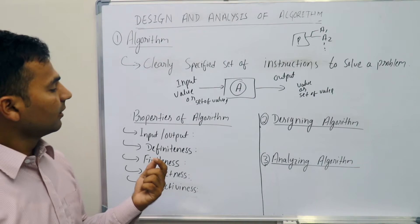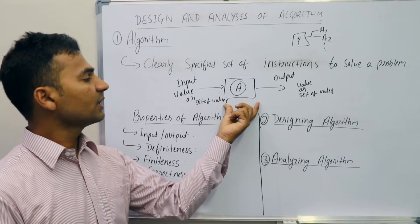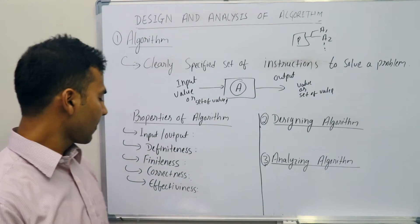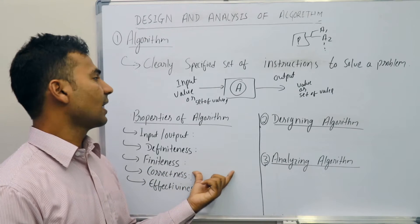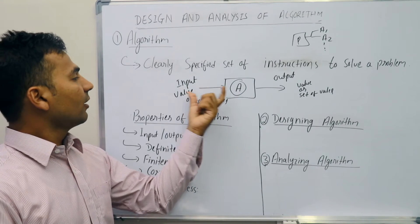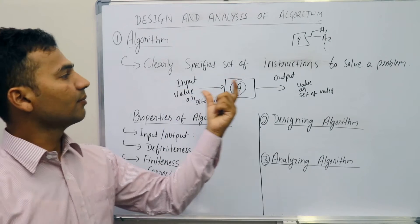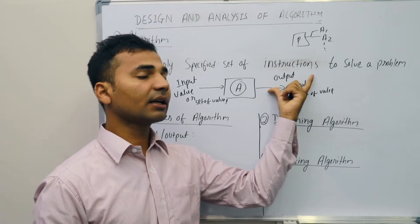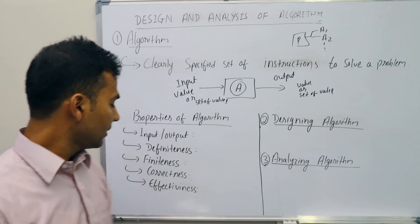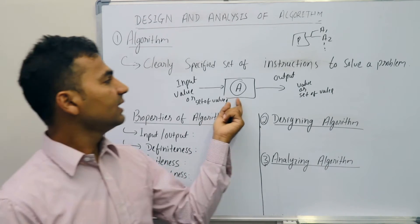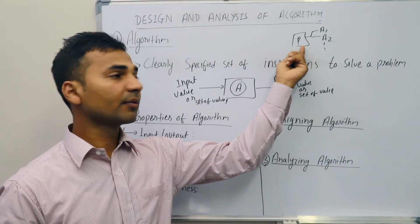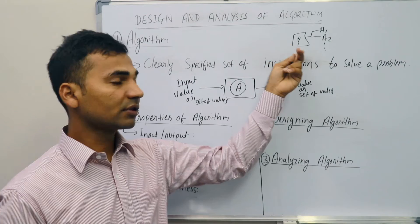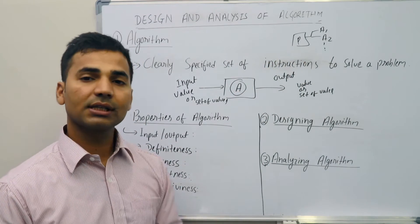Finiteness says that the algorithm must terminate after running some finite steps. Correctness says that whenever algorithm A takes some correct input, it must produce some correct output — given the correct input, there must be a correct output when it terminates. Effectiveness means that the algorithm must be effective enough to solve the problems for which it was designed.